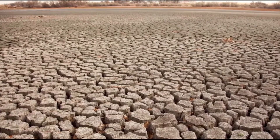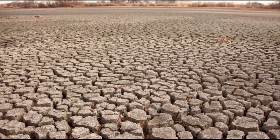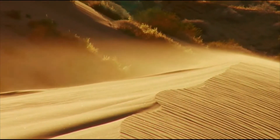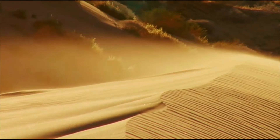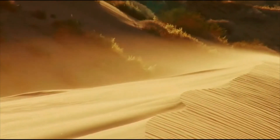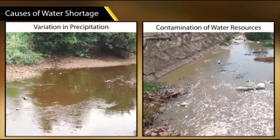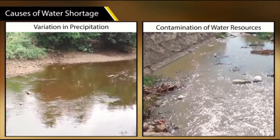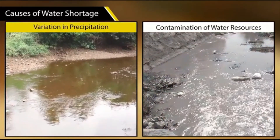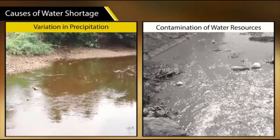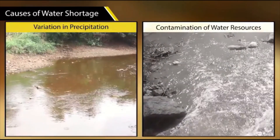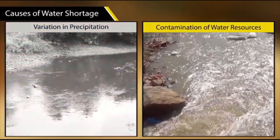Places located in drought-prone zones are most susceptible to water scarcity. For instance, much of Rajasthan is dry or semi-arid and faces severe water shortage. Water scarcity may be caused by variation in seasonal or annual precipitation, as well as overuse and contamination of water resources.